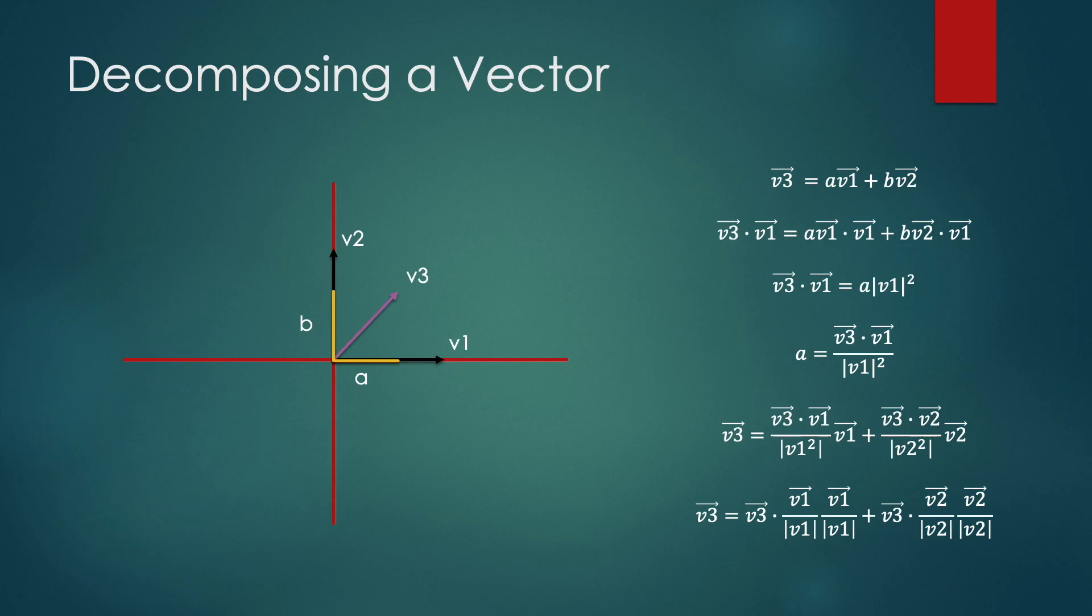So we take v3 and we project it, that's another word for taking the dot product, we project it onto the unit vector in the direction of v1. That is v1 normalized. And then since that output is a scalar, that output being how much of v3 lies in v1, we then point it in the direction of v1 by multiplying it by the unit vector in the direction of v1 or v1 normalized again.